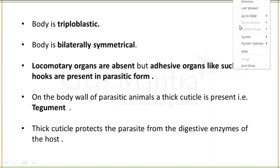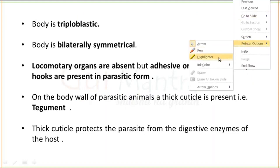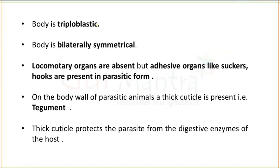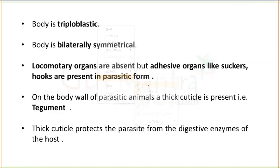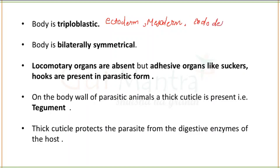Platyhelminthes have triploblastic germ layers present. Triploblastic means three layers are present: Ectoderm, Mesoderm, and Endoderm — all three types of layers are present here.